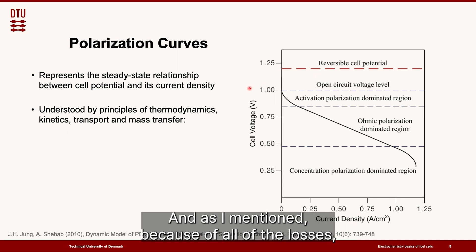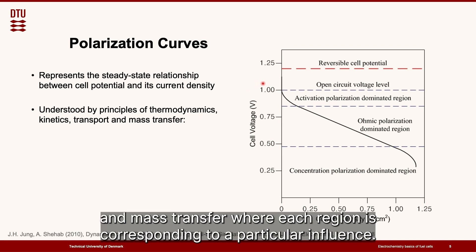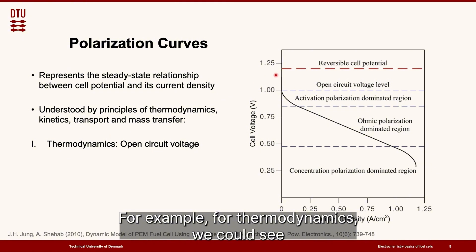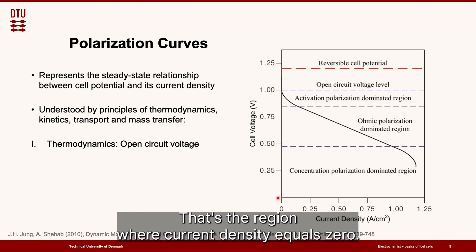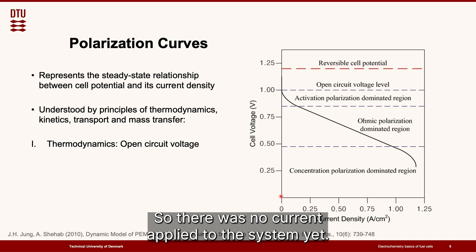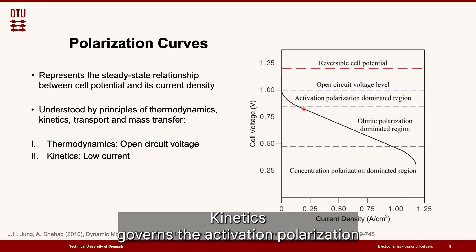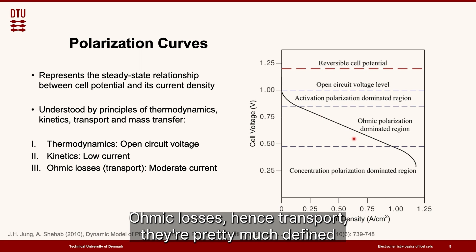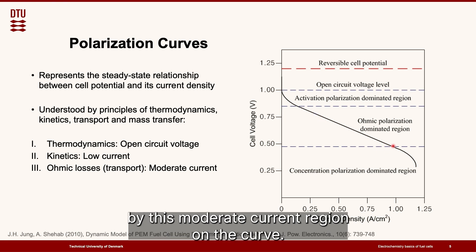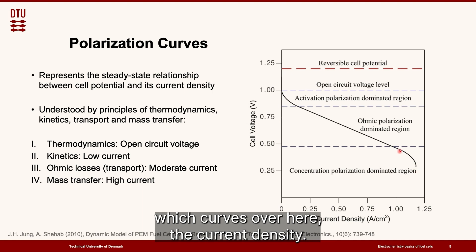And as I mentioned because of all of the losses it could be understood by principles of thermodynamics, kinetics, transport and mass transfer where each region is corresponding to a particular influence. For example, for thermodynamics we could see the most influence of it in the open circuit voltage region. That's the region where current density equals zero so there was no current applied to the system yet, and that's pretty much a free energy of our system. Kinetics governs the activation polarization dominated region over here at the low currents. Ohmic losses, hence transport, they're pretty much defined by this moderate current region on the curve and mass transfer, the very end of our curve which curves over here at the current density.